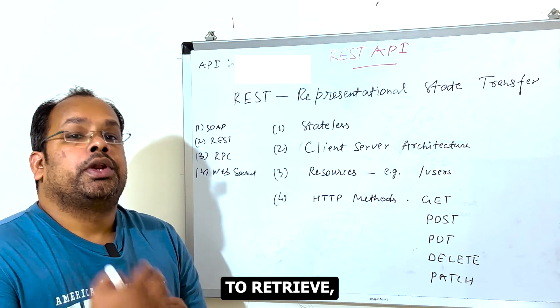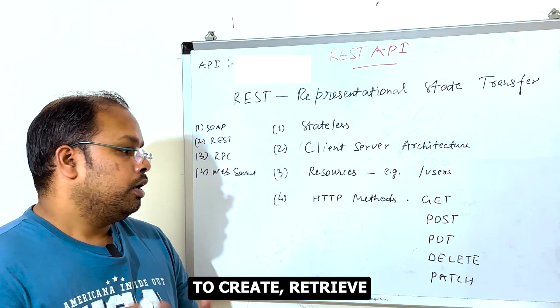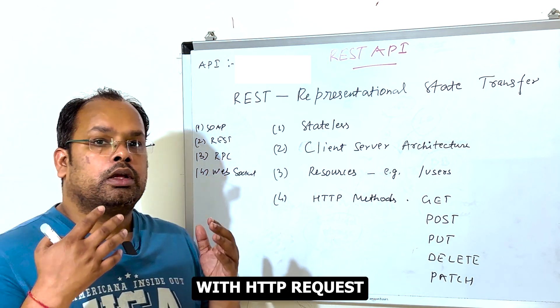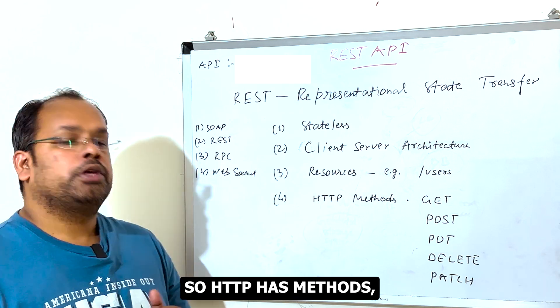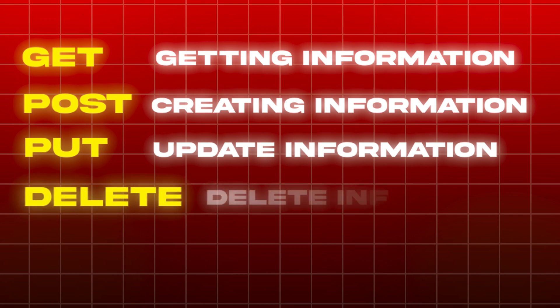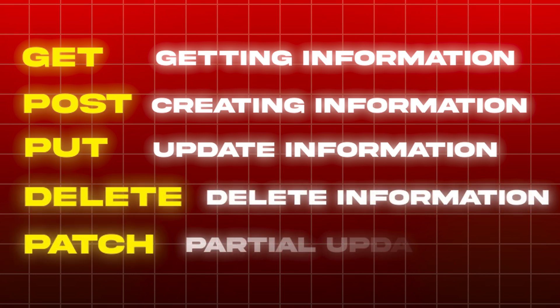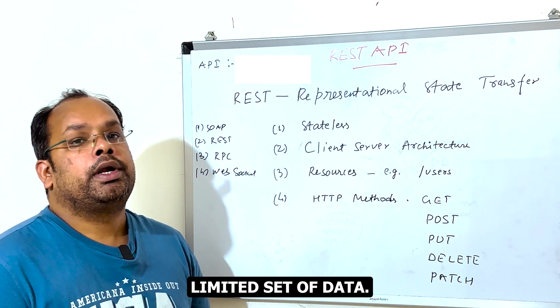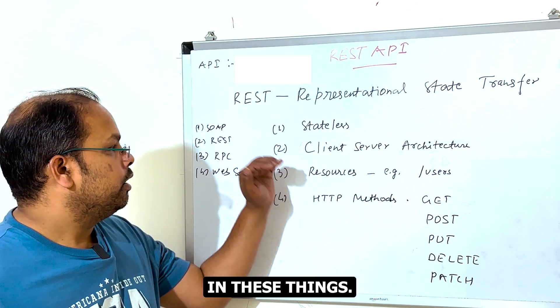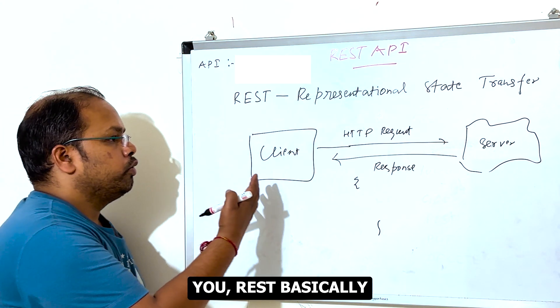The fourth principle involves HTTP methods. To retrieve, create, update, or delete data, we use HTTP requests. HTTP has methods: GET is for getting information, POST is for creating information, PUT is for updating information, DELETE is for deleting information, and PATCH is for a partial update with a limited set of data.